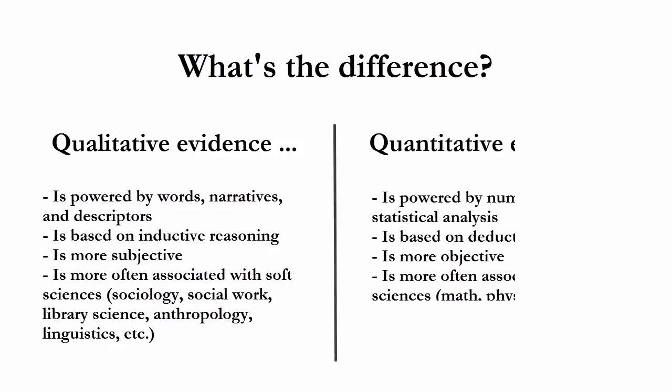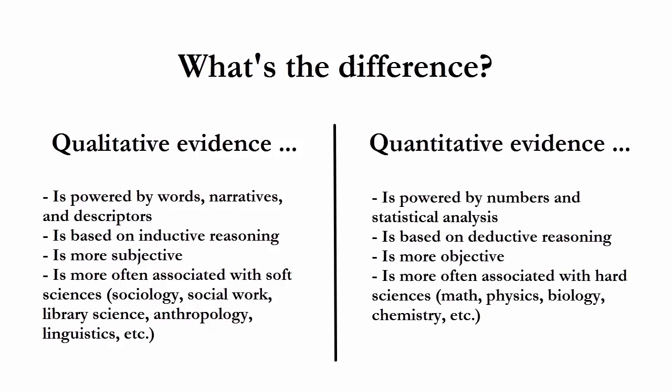On the other hand, quantitative evidence — and you have a clue in that word, quantitative, related to the word quantity — is powered by numbers and statistical analysis. This is where you'll often see graphs. It's more objective, so it's often associated with the hard sciences, like math, biology, chemistry, and so forth. This is not to say that physics cannot include qualitative evidence, or that linguistics can't include quantitative evidence. It's just that these fields are most often where you'll see these respective types of results.